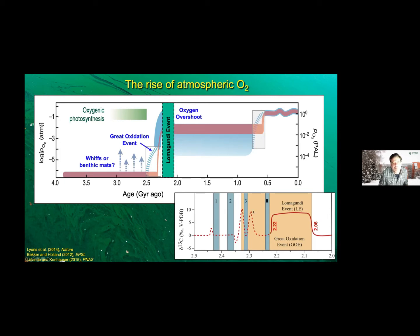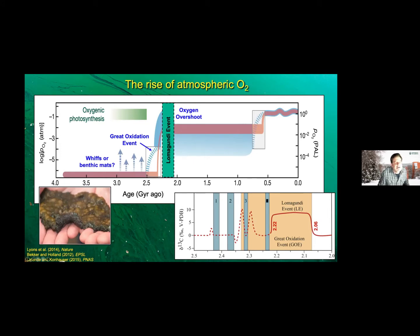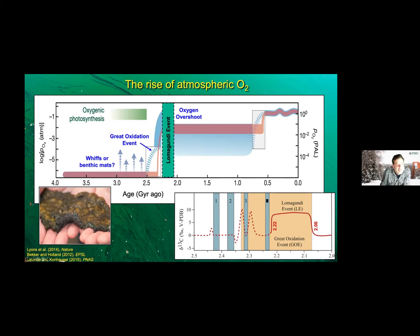It's also an interesting point in time because we have global Huronian glaciations — in Canada, South Africa, and Brazil. These arrows are what Ariel Anbar would refer to as whiffs of oxygen: transient stages where oxygen might have increased temporarily and then gone back down, because the atmosphere is anoxic until the GOE. My former grad student Stefan Lalonde and I wrote a paper in PNAS arguing instead that these were benthic microbial mats growing on rock surfaces producing O2, which oxidized the substrate underneath. Evidence of oxidative signals predating the GOE don't necessarily have to be from the atmosphere.